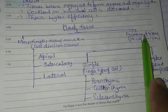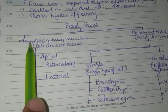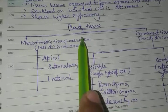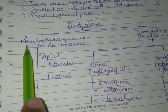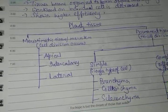Plant tissues are of two types. First one is meristematic tissue otherwise meristem clear? The other one is permanent tissue.